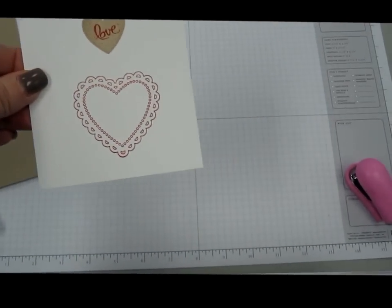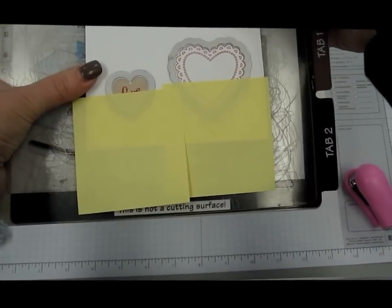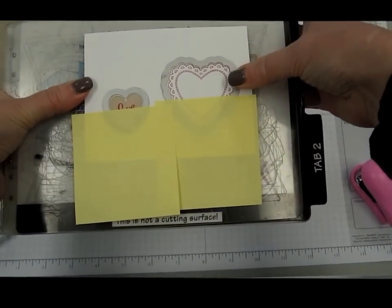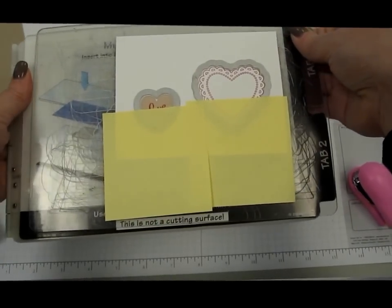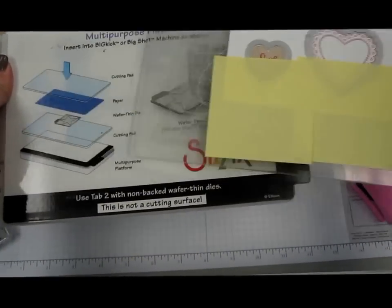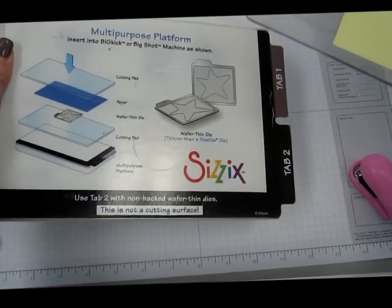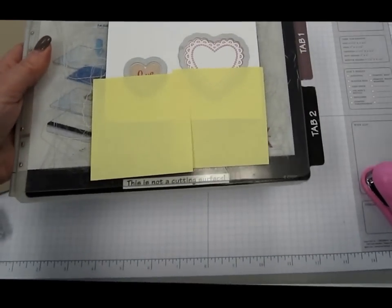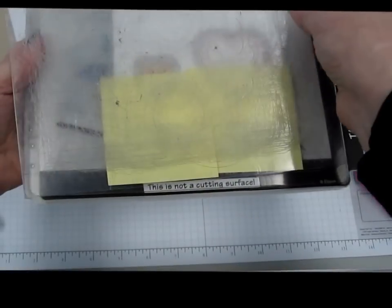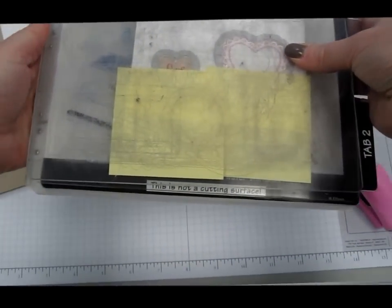Now I'm going to run those through the Big Shot with the Hearts of Flutter die. And I've already got that set up here. So you can see I've got those on there. And I've held them in place with the sticky notes. And then I've got my multi-purpose platform on tab 2. Put your cutting plate down, your other cutting plate on top, and then you'll run that through your Big Shot.